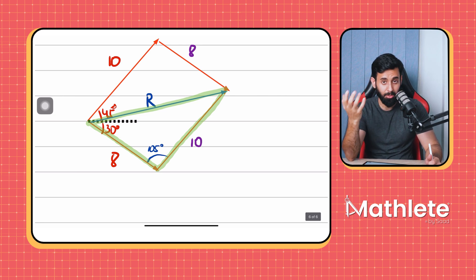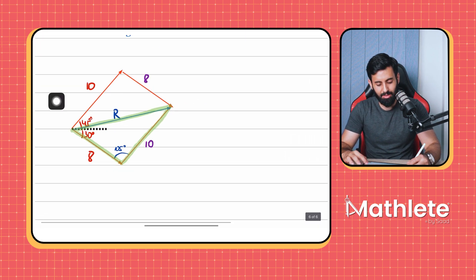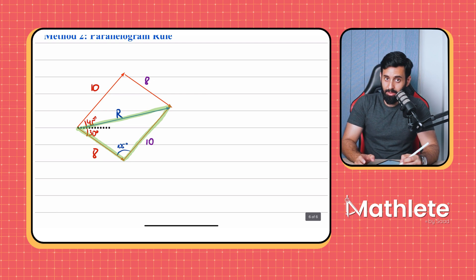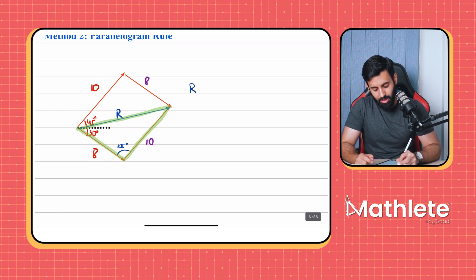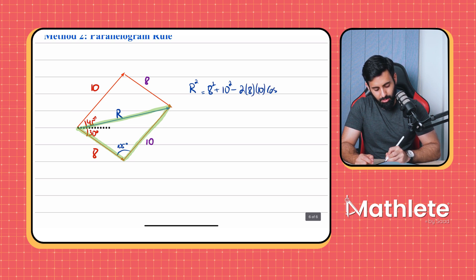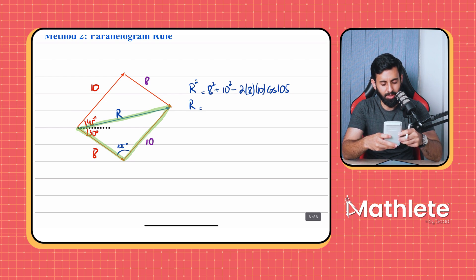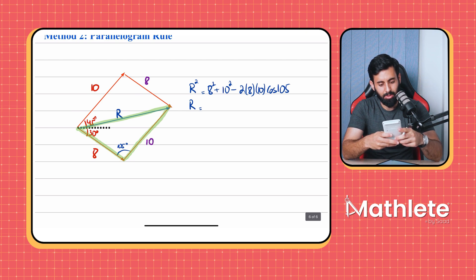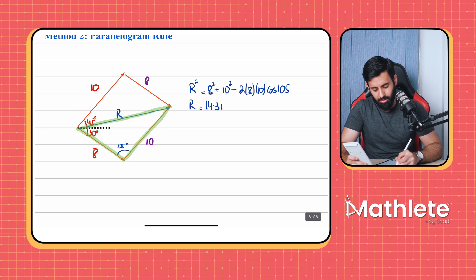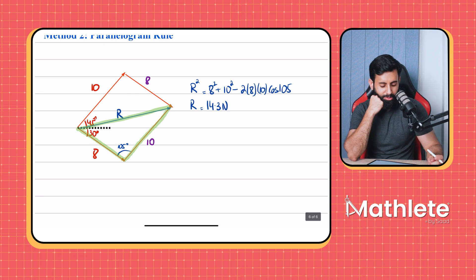We have a triangle with two known sides and the included angle of 105 degrees — this calls for the cosine rule. R² = 8² + 10² − 2 × 8 × 10 × cos 105. Taking the square root gives exactly the same answer: 14.3 newtons.